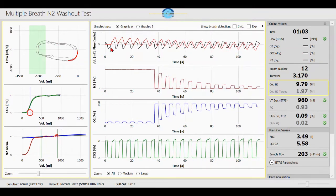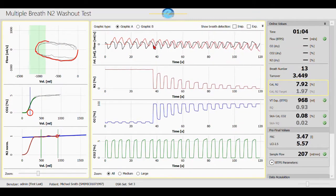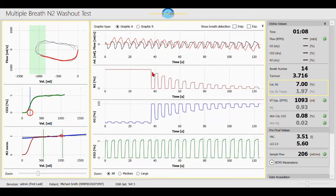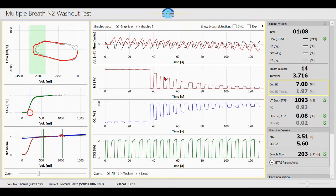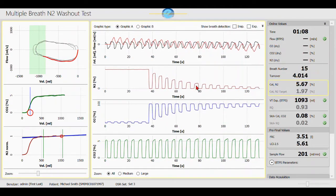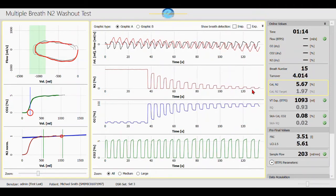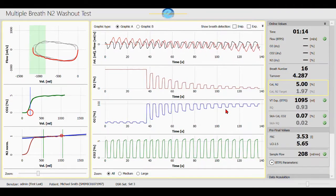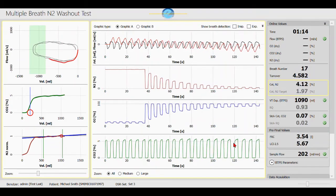In the center, we have the flow in black and the volume in red. Below, we have the nitrogen concentration, where we see that the end tidal nitrogen concentration decreases with every breath, then the oxygen concentration and the carbon dioxide concentration.